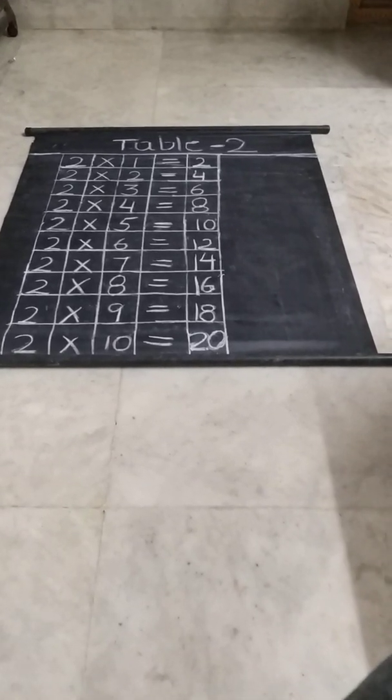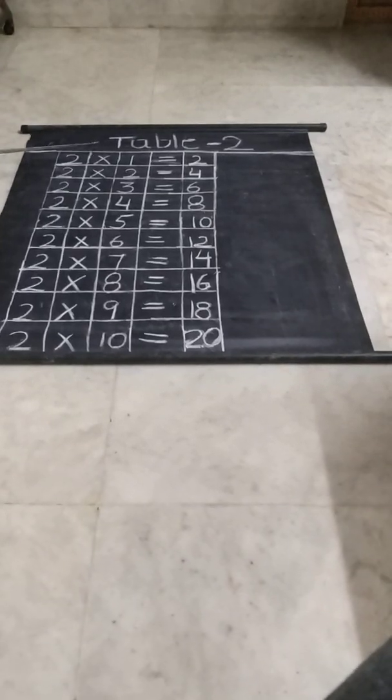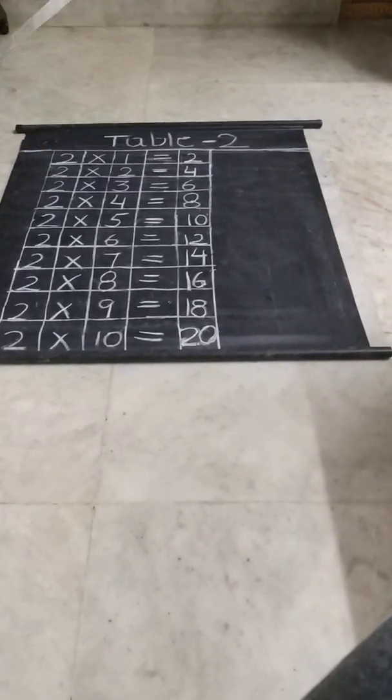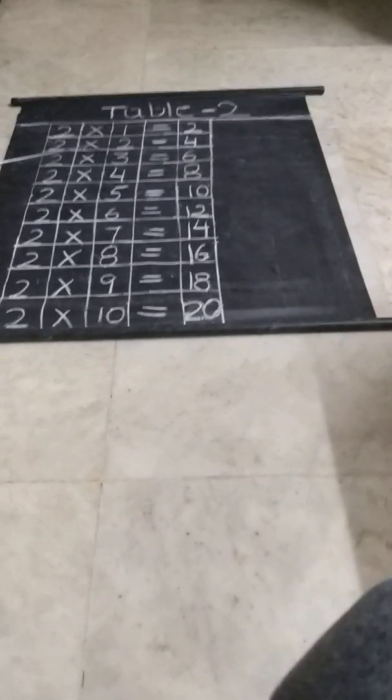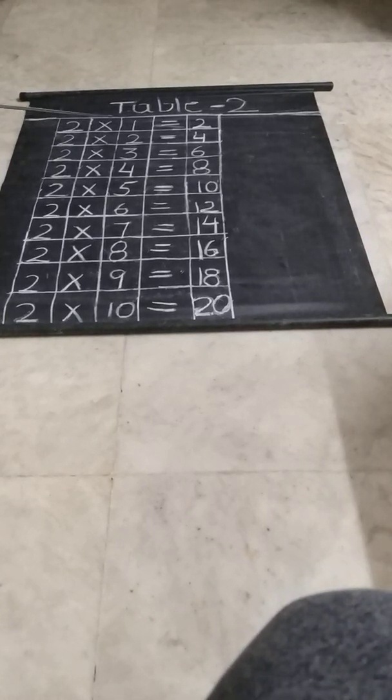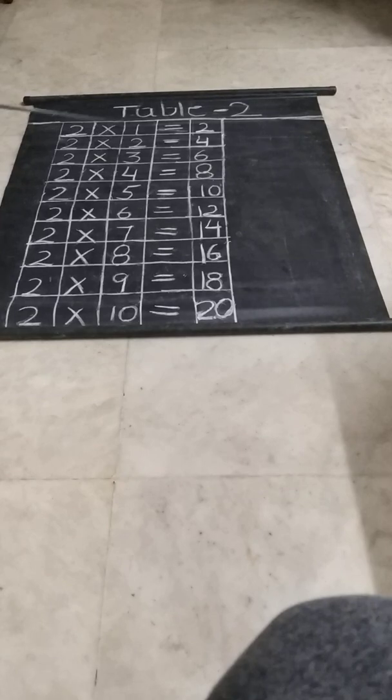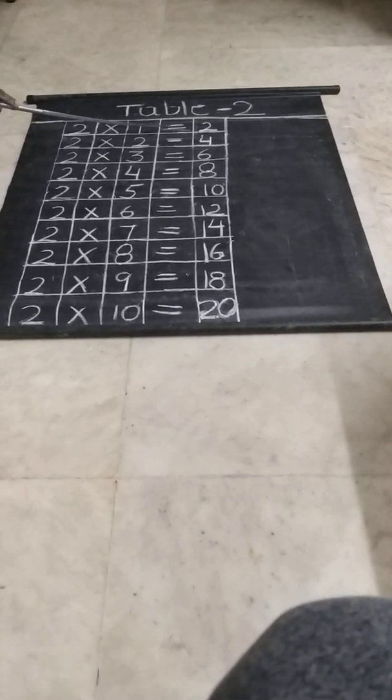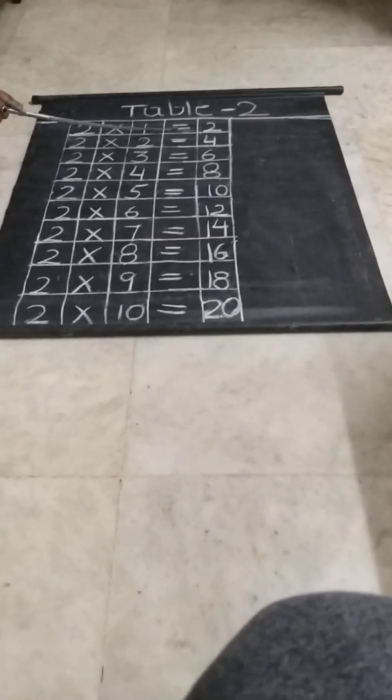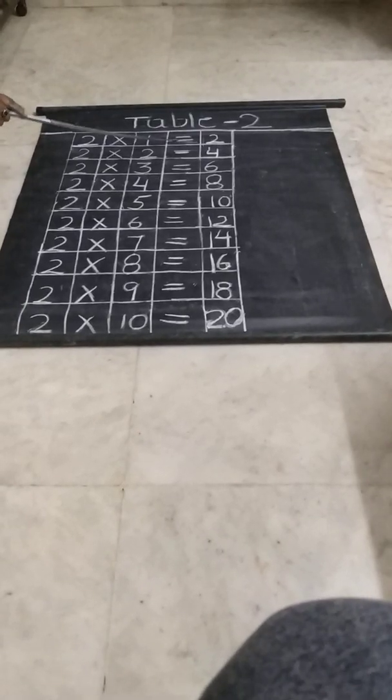Table 2. Today we will learn table 2. So before going to table 2, I will tell you what are the symbols. This symbol is called cross. We will say as into or cross. And this symbol is equal to.